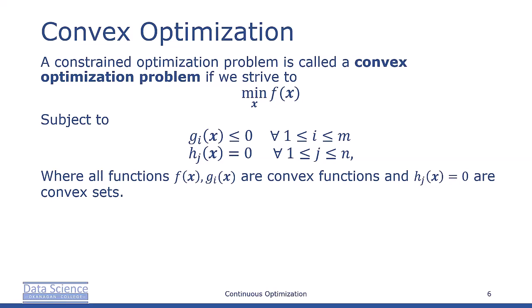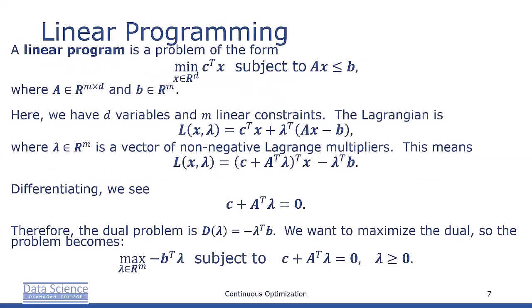Next, we're going to see an example of convex optimization called linear programming. Consider this special case when all the preceding functions are linear. Here we want to minimize c^T x subject to Ax ≤ b where A is an m by d dimensional real matrix and b is an m dimensional vector.